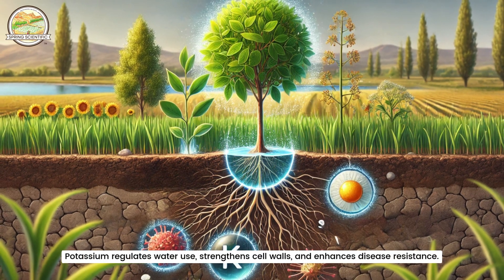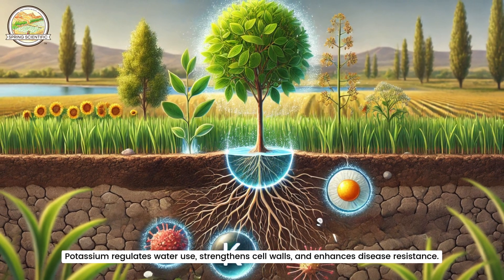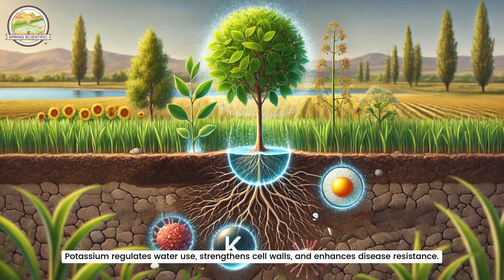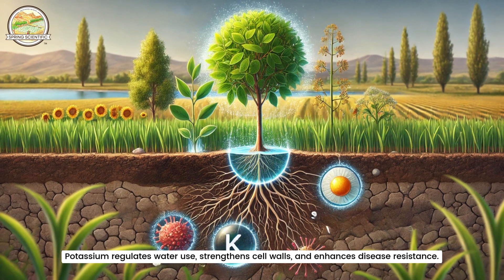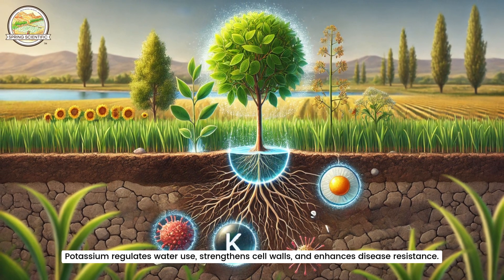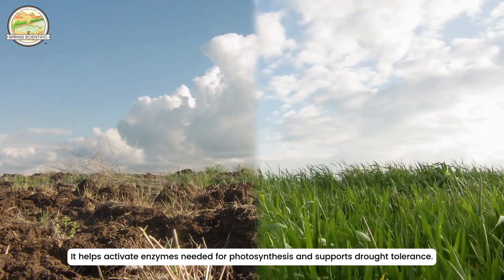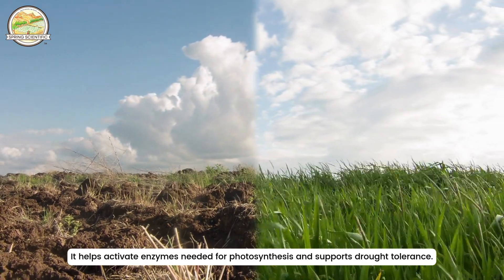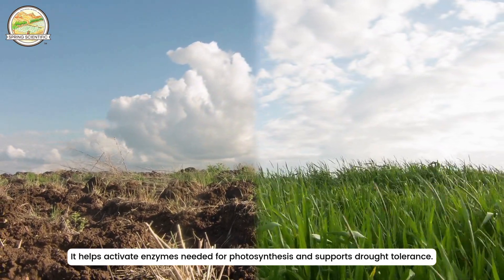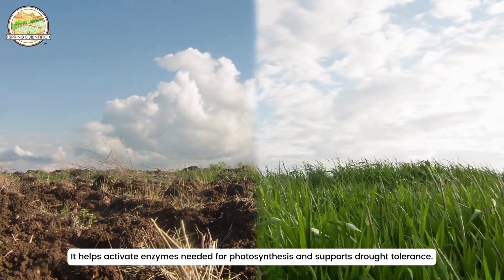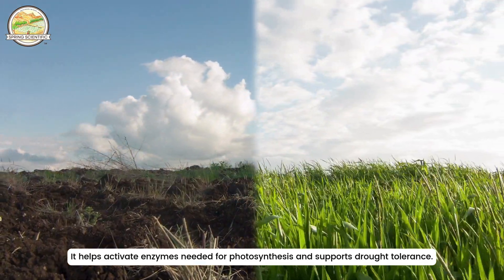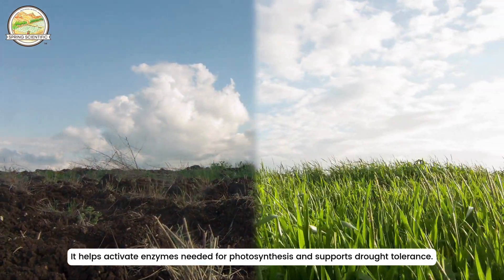Potassium (K) regulates water use, strengthens cell walls, and enhances disease resistance. It helps activate enzymes needed for photosynthesis and supports drought tolerance.